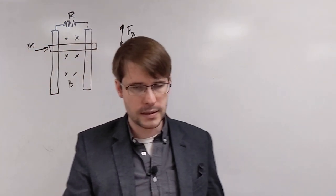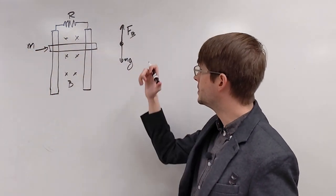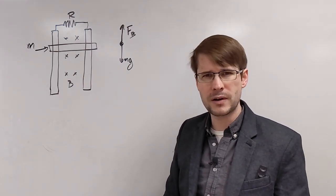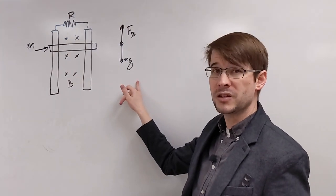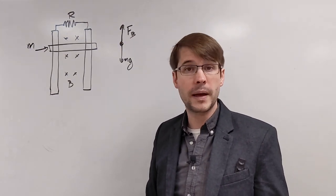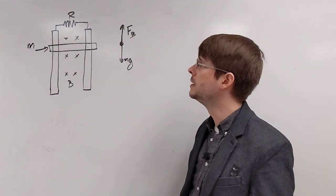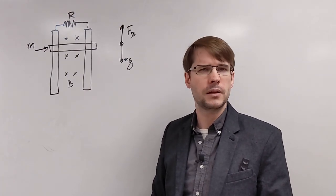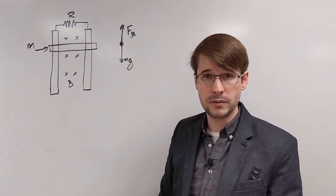So as this object falls, this is going to be the forces. Depending on the speed that it's traveling, the weight doesn't change, but the magnetic force does. When it's not moving, there's no magnetic force. And if it's moving very quickly, there's a much larger magnetic force. Let's take a look at the equation we had last time for the strength of the magnetic force.